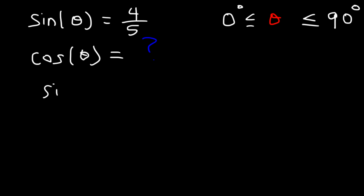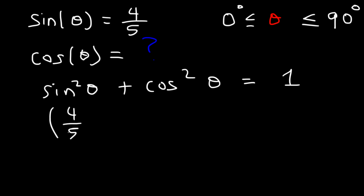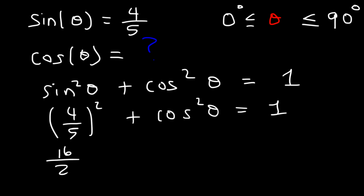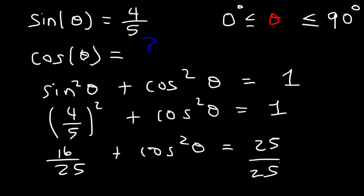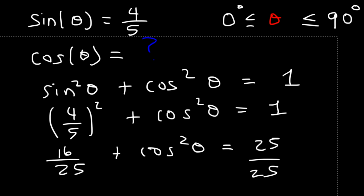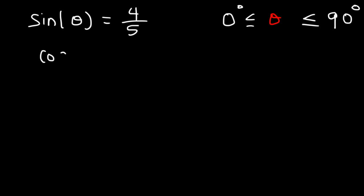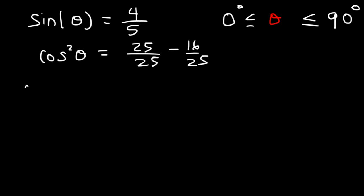Using the Pythagorean identity, sine squared plus cosine squared equals 1. If we know the value of sine, we can find the value of cosine. Sine is 4 over 5, so (4/5) squared gives us 16 over 25. Writing 1 as 25 over 25, we subtract 16 over 25 from both sides. Cosine squared theta equals 25 over 25 minus 16 over 25. Since 25 minus 16 is 9, we get 9 over 25.